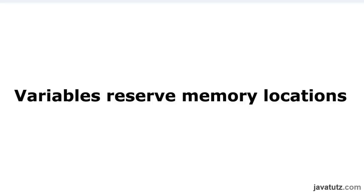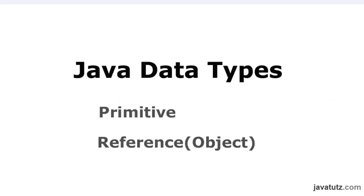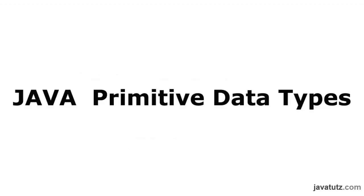There are two main variable data types available in Java: primitive data types, and reference or object data types. I will surely tell you about reference data types soon. For now, we are focusing on primitive data types.